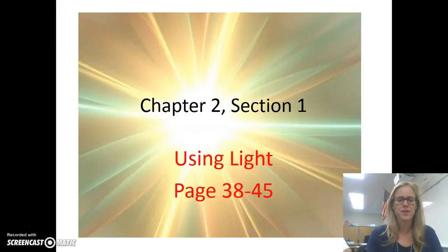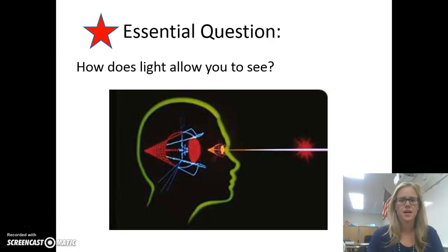You should have already read and taken your Cornell notes on chapter 2, section 1, pages 38 to 45. We are going to be learning about using light. Our essential question, our daily question that we're examining as we talk about light is how does light allow you to see? Taking a look at this picture at light entering our eyes, how does light allow you to see?